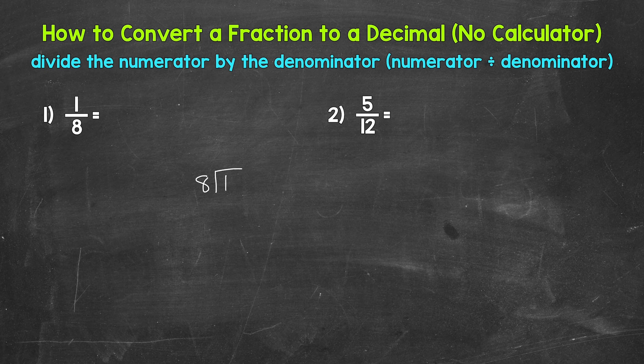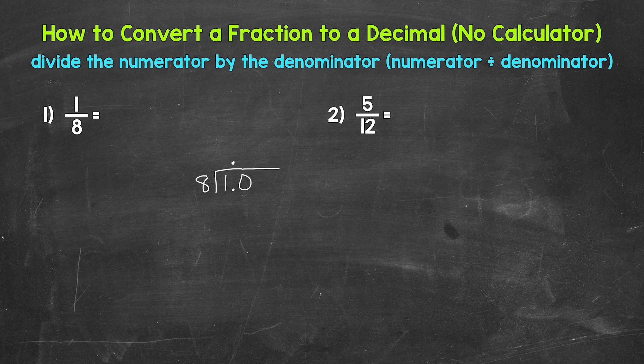As far as one divided by eight, how many whole groups of eight in one? We can't do that. So we need to use a decimal and then a zero in order to work through the division. Remember, zeros to the right of a decimal do not change the value of the number. Once we have that decimal and the zero, we can bring the decimal straight up into the quotient, the answer, and I'm going to extend the division bar as well.